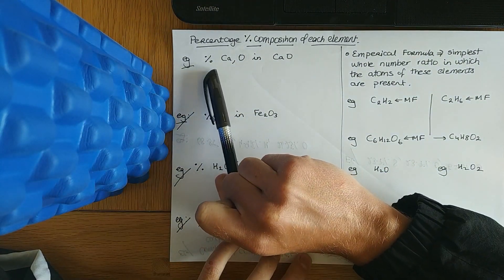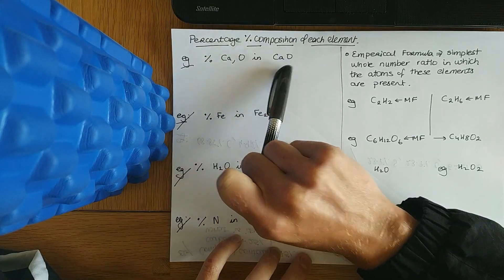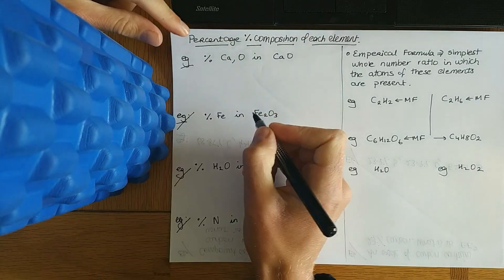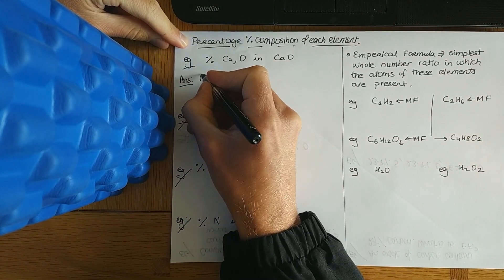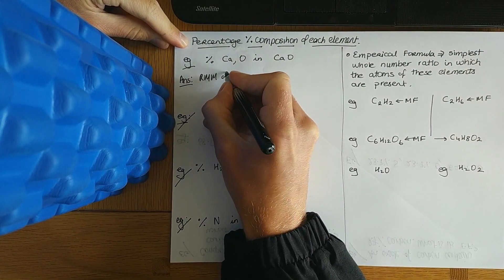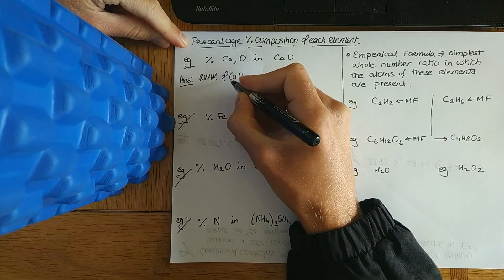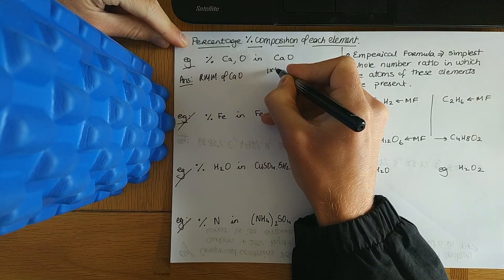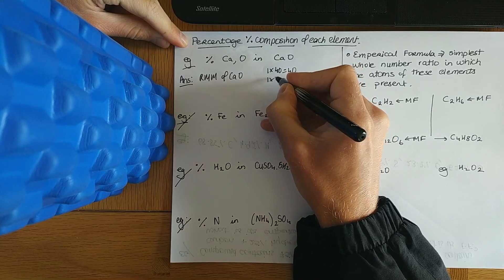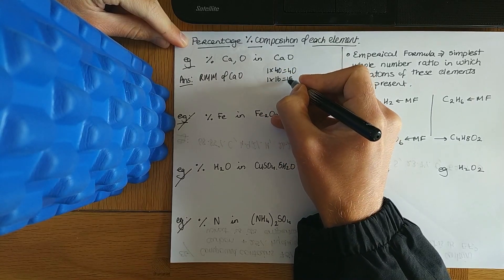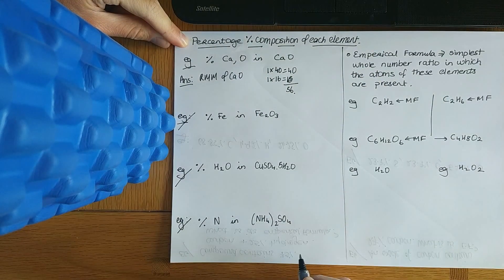Here they've asked: what is the percentage of calcium and what is the percentage of oxygen in calcium oxide, CaO? The first thing you must do is work out the relative molecular mass of CaO. You look at your periodic table — you've got one calcium, relative molecular mass 40, and you've got one oxygen, 16. When you add them together, you get 56.